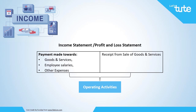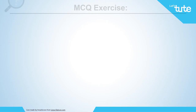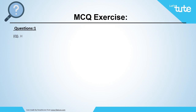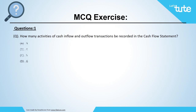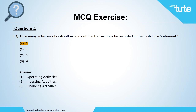Let's revise what we learned today by solving some multiple choice questions. Question one: The cash flow statement can be categorized into how many headings? Option A: 3, Option B: 4, Option C: 5, or Option D: 6. The answer is Option A — 3. The three activities are operating, investing, and financing activities.